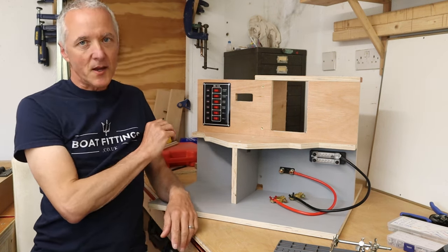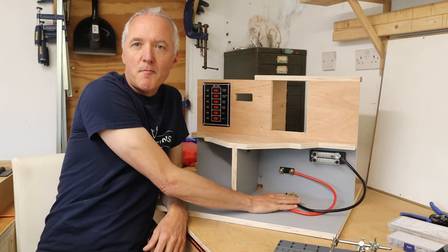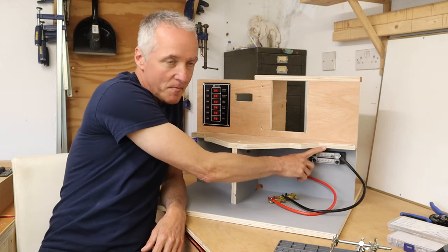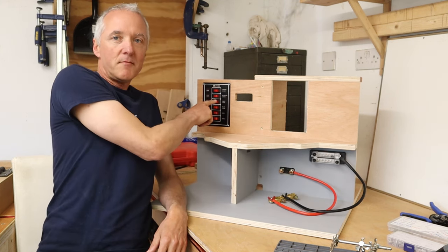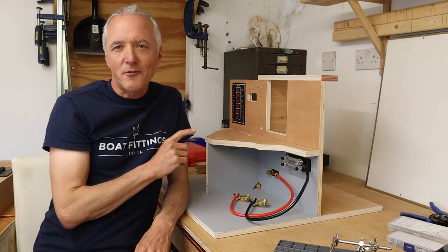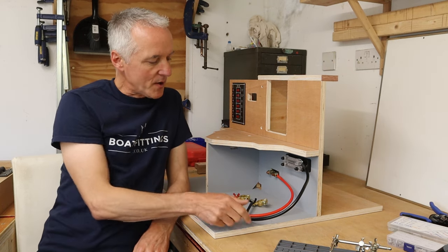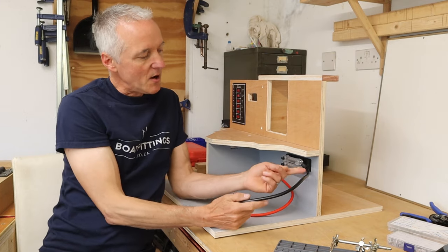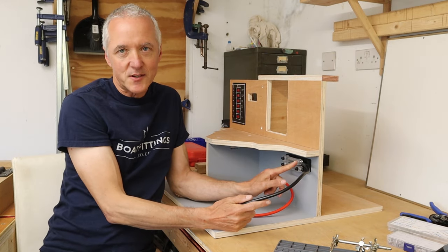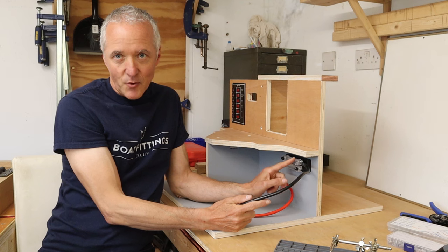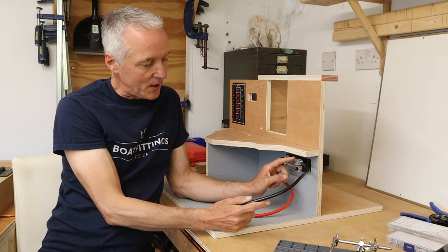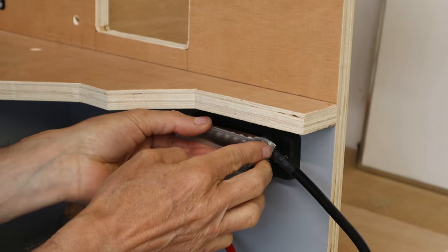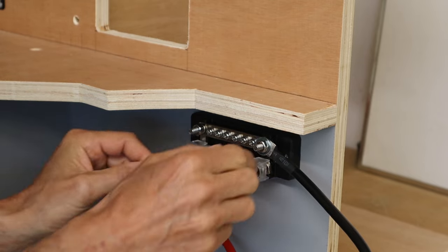What we did last time is we talked about the main battery leads, the master switch panel, buzz bar and main switch panel. One thing I noticed at the end of the last video was when I put this heavy-duty battery lead into the buzz bar, it wasn't a good fit when I tried to put this plastic cover on. So what I'm going to do first is just sort that little issue out.